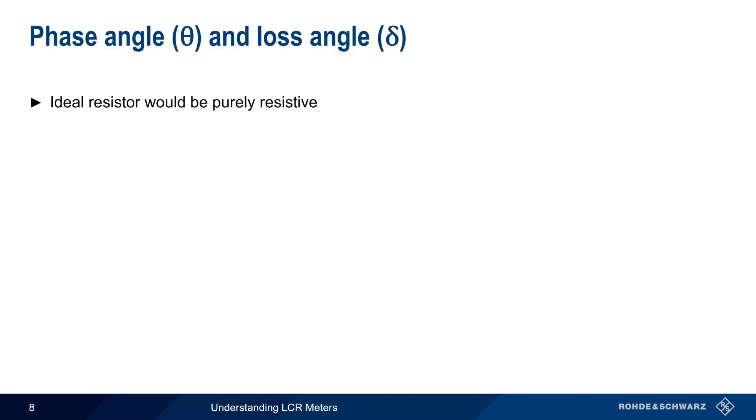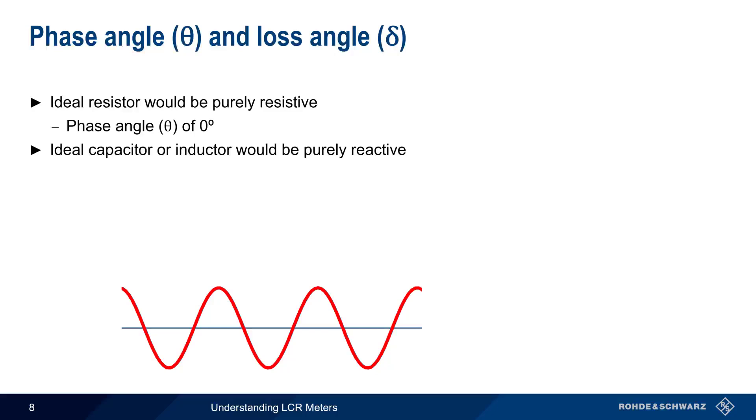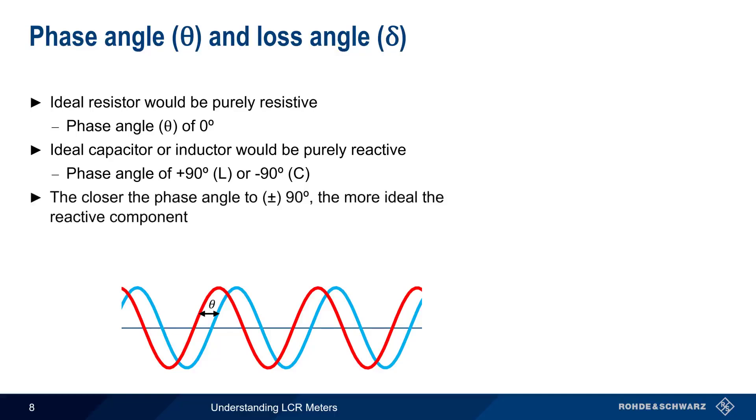Recall that an ideal resistor would be purely resistive. In this case, the voltage and current would be in phase, so the phase angle, theta, between them would be zero degrees. An ideal capacitor or inductor would be purely reactive, with a phase angle of plus 90 degrees for an ideal inductor, or minus 90 degrees for an ideal capacitor. In real world devices, the closer the phase angle is to 90 degrees, the more ideally reactive it is.